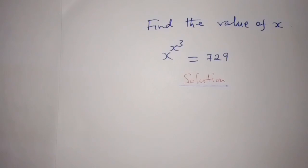Find the value of x, where x to the power of x to the power 3 is equal to 729.